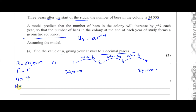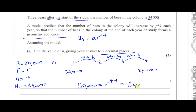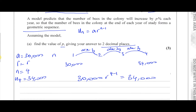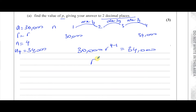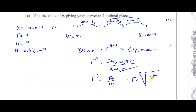So here n is going to equal 4, and the fourth term u_4 is 34,000. Now we have enough information to find r. We say: 30,000 times r to the power of (4 minus 1), which is r cubed, equals 34,000. Dividing both sides by 30,000, r cubed equals 34,000 over 30,000, which simplifies to 17 over 15. Therefore, r equals the cubed root of 17 over 15.